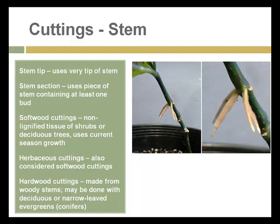There are also hardwood cuttings made from woody stems, second-year growth. My video describes and demonstrates making hardwood cuttings from a plant called red osier dogwood. This can also be done with quite a few evergreen trees. It's an important technique to use in propagating woody plants.